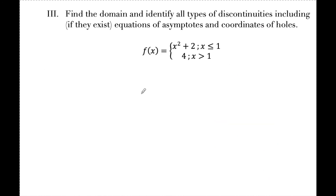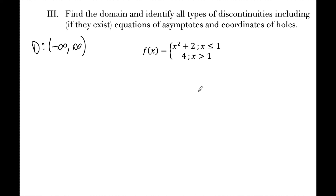For example three, a piecewise function defines x ≤ 1 using x²+2 and x > 1 using y = 4. Every x value is defined, and each piece is continuous on its own — x²+2 is a polynomial and y=4 is a line. So the domain is negative infinity to infinity, all reals.